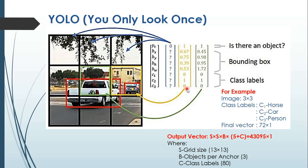The last three elements are the class labels. In this image, both objects are cars, so the C2 element will become 1. There is no presence of person or horse, so those two elements will become 0. In all cases, the first five elements are the same; however, the next elements depend on the size of the class labels.